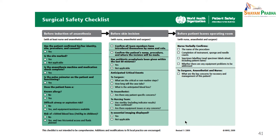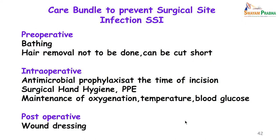The care bundle for surgical site infection prevention begins with the WHO surgical safety checklist, used preoperatively before any operation. The patient should be bathed before coming to the operating theatre; hair removal should generally not be done, though hair may be cut short when necessary. Intraoperative antimicrobial prophylaxis should be given at the time of incision or up to 30 minutes before. Surgical hand hygiene, appropriate sterile personal protective equipment, and maintenance of oxygenation, temperature, and blood glucose are essential. Postoperative wound dressings should be done at the appropriate time.